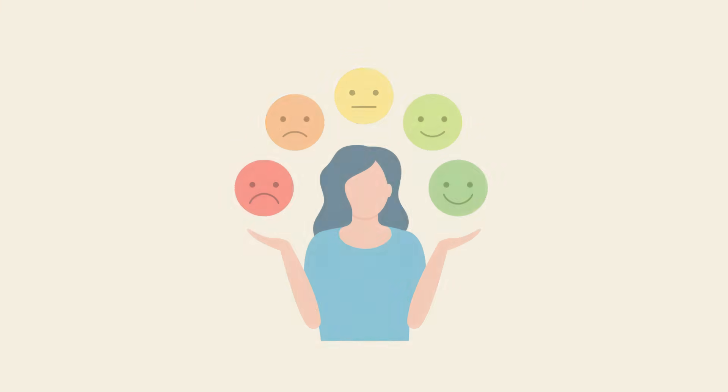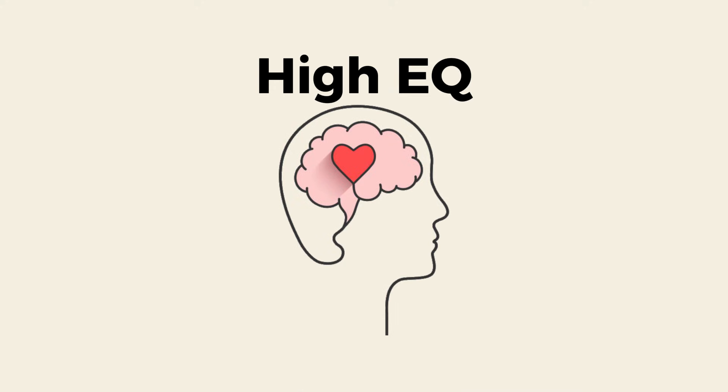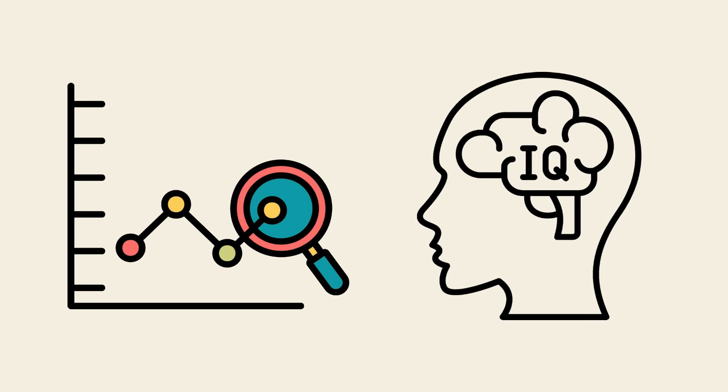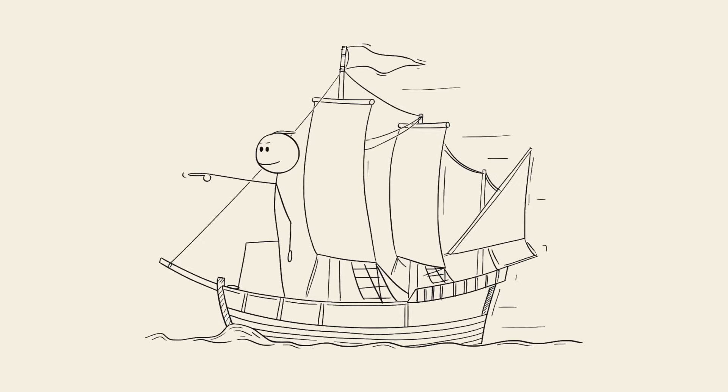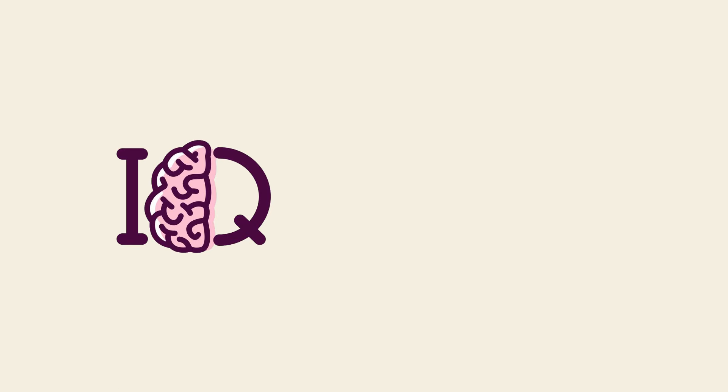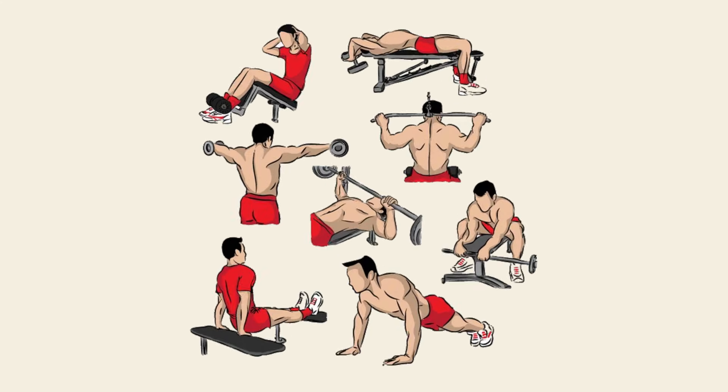Ever met someone who just gets people, they read body language, sense emotions, and know exactly how to react in any situation? That's high EQ in action. Here's the kicker. Studies show EQ is often a better predictor of success than IQ. It's crucial for leadership, relationships, and everyday social interactions. And the best part? Unlike IQ, you can actually improve your EQ. It's like a muscle. You can train it to become stronger.